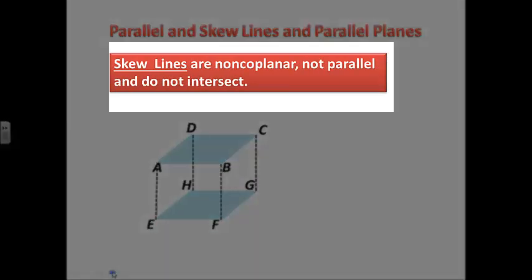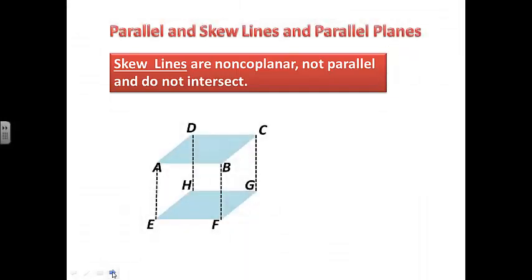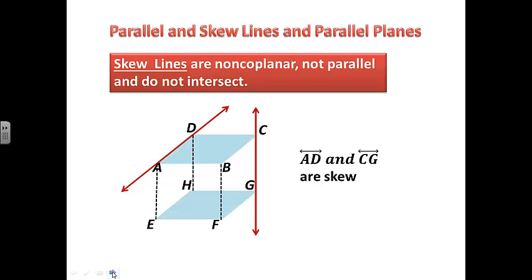Skew lines — I like to say that skew lines are all skewed up. They don't have anything in common with anything. They are non-coplanar, not parallel, and will never intersect. An example would be line AD — it is skew to line CG. If we were to continue drawing these lines in the diagram they would appear to intersect, but remember we are modeling a three-dimensional surface, so in space these lines would never actually intersect. We would write it: line AD and line CG are skew.